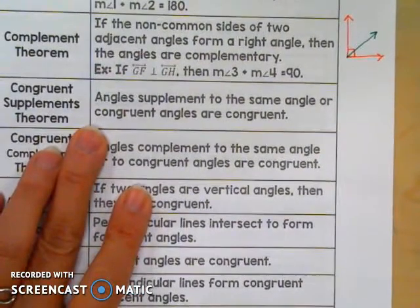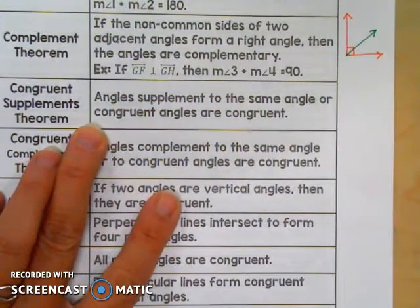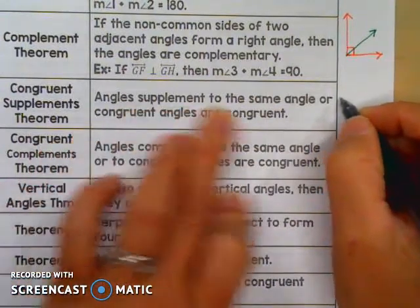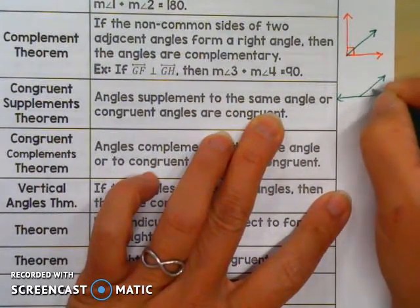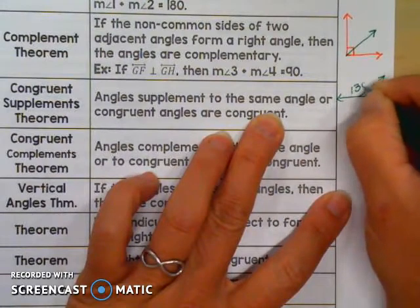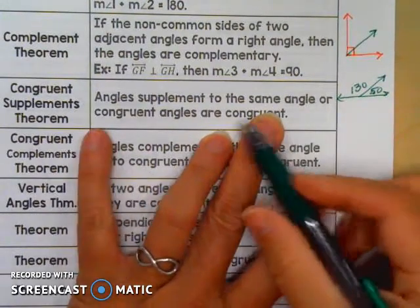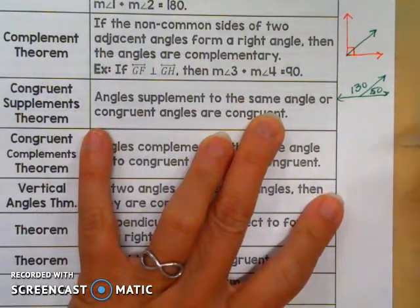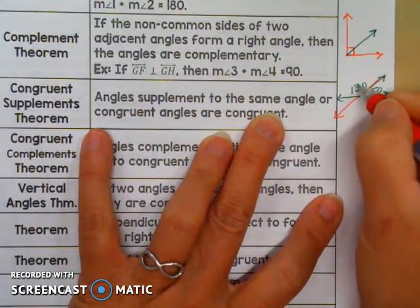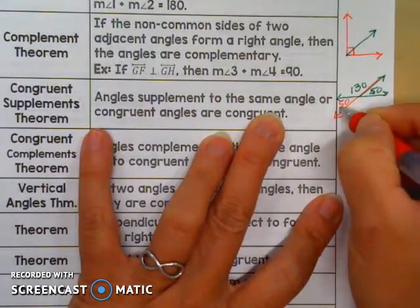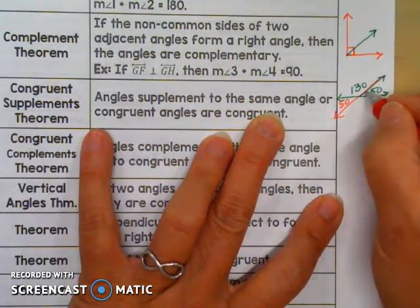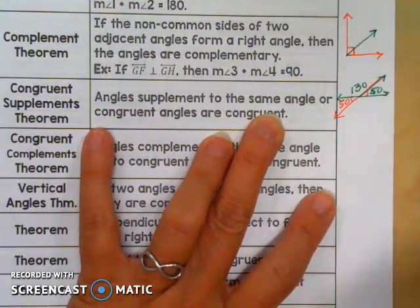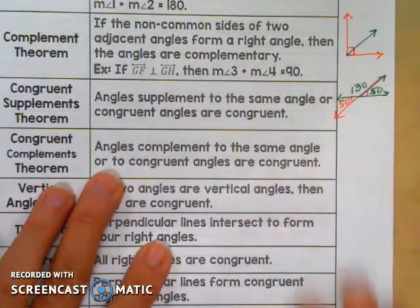Congruent Supplements Theorem: angles supplementary to the same angle or to congruent angles are congruent. This one definitely needs a picture. If two angles are supplementary to the same angle — supplements mean they add up to 180 — so if this is a 50-degree angle and this is a 130-degree angle, both of these angles are supplementary to 130, which means they're congruent to each other. In this picture they're also vertical angles, but the statement holds even if they're not in the same picture.